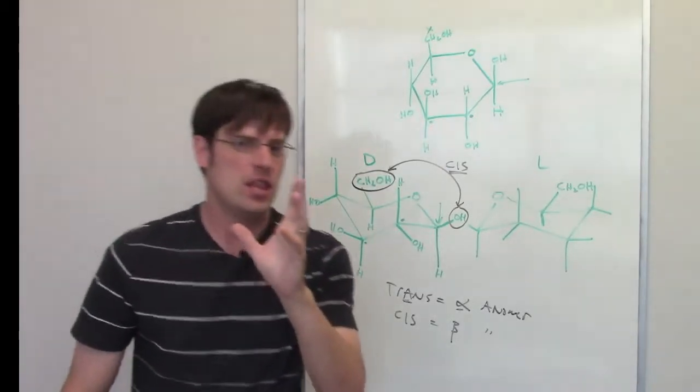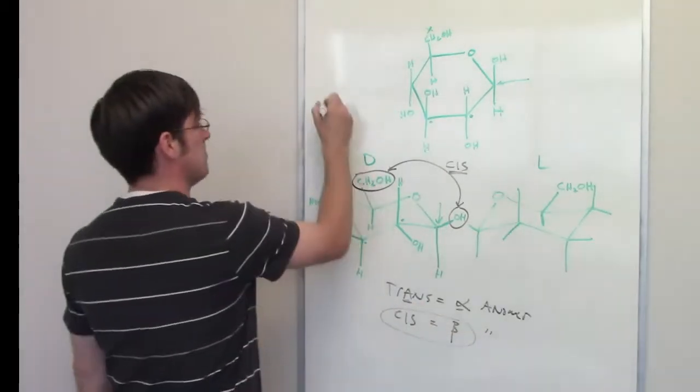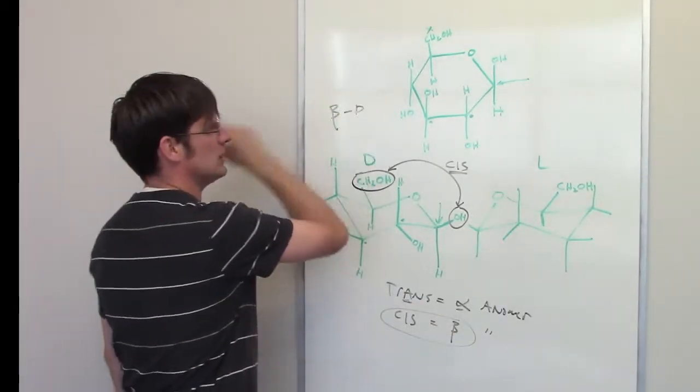So, this has cis, therefore it is a beta anomer. So, this is beta D glucose.